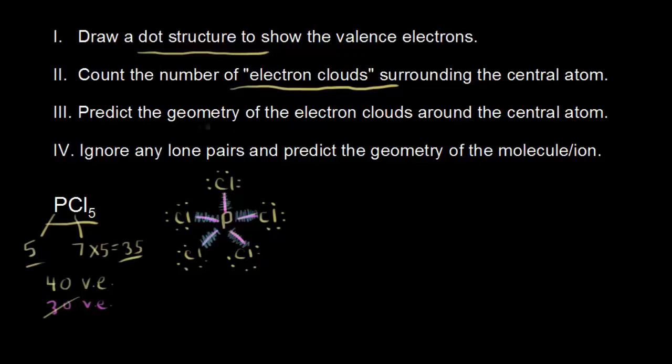The next step is to predict the geometry of the electron clouds. Those valence shell electrons are going to repel each other — that's VSEPR theory, valence shell electron pair repulsion. Since they're all negatively charged, they're going to repel and try to get as far away from each other as possible in space. When you have 5 electron pairs, the furthest they can get from each other is a trigonal bipyramidal shape.